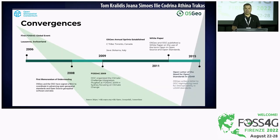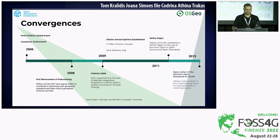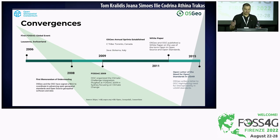I think we've come a long way, built on a solid foundation since then. In 2006 we had the initial event in Lausanne and the first Memorandum of Understanding between OGC and OSGEO — that proved very valuable in sowing the seeds of where we are today. In 2009 we started the annual OSGEO sprints: the Sea Tribe sprint in Toronto and the Java sprint in Bosena, Italy, both of which continue. These sprints are a very important piece of the equation, with open source projects working together implementing open standards.